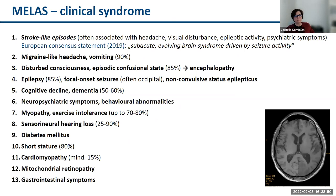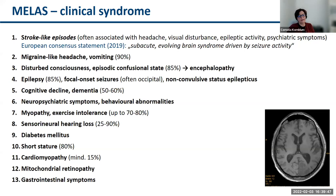MELAS syndrome is characterized by stroke-like episodes, usually associated with headache, visual disturbance, epileptic activity, and behavioral abnormalities or psychiatric symptoms. A European consensus statement says these stroke-like episodes are sub-acute evolving brain syndrome driven by epileptic seizure activity — which differs from a vascular hypothesis or mitochondrial microangiopathy hypothesis, though this question is not finally resolved. From the clinical point of view, seizures are very important. Migraine-like headache, vomiting, disturbed consciousness, and confusional states indicate an encephalopathy. Epilepsy is very frequent.